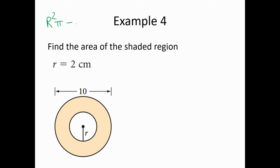Capital R squared pi minus little r squared pi. Now we're given this little one is 2, and we're given the diameter of the big one, which is 10. So that actually means the radius would be 5. So, capital R is 5, and little r is 2. So we just do 25 pi minus 4 pi, which is 21 pi. Exact answer. And then, go to our calculator. And that's about 65.97. In that case, I'd probably ask you to round it to the nearest whole number. It's about 66 square centimeters.